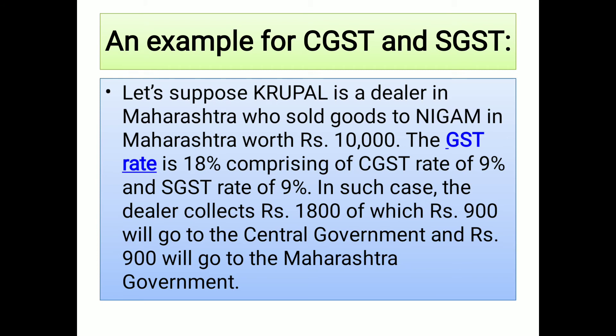Let's say the tax rate is 18%. As we saw, both the state and central governments need to receive tax. So 50% goes to the state and 50% goes to the central government. On Rs. 10,000 at 18%, the tax is Rs. 1,800. Distributing 50-50: Rs. 900 is collected by the central government as CGST and Rs. 900 is collected by the Maharashtra state government as SGST. This is our CGST and SGST example.